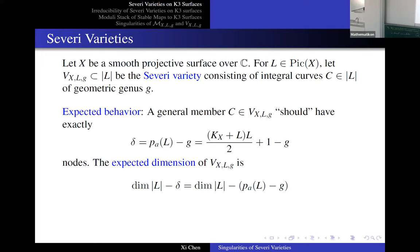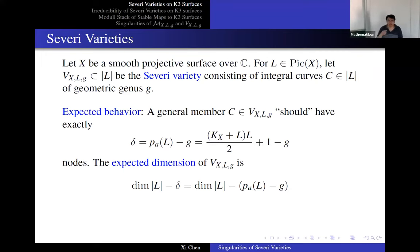It's called the Severi variety — a very classical object. For the Severi variety, we have some expected behavior. It's a very naive consideration. If you take a general member in the Severi variety, we're expecting — this is actually not necessarily true — but we're expecting this thing is nodal. We're expecting it has exactly the arithmetic genus of this linear system minus the geometric genus, so expecting we have delta nodes. The other thing is we're expecting the dimension of this thing is the dimension of the linear system minus delta. Each node should impose exactly one condition on this linear system.